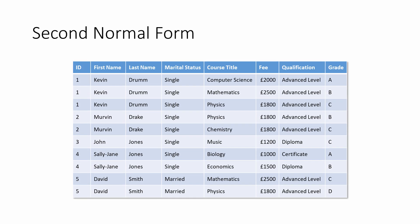There's more information about each course now, which means more duplication. And there's also the grade that each student achieved when they completed a course. By definition, to be in second normal form, a relation — in other words a table — must not have any attributes that are partially dependent on the primary key.